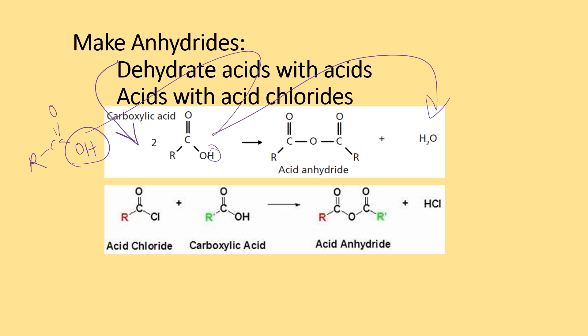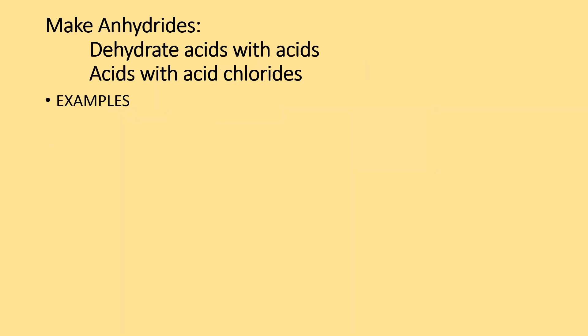You can also use a carboxylic acid and an acid chloride. This time the H and the Cl combine to form HCl, but you still get an anhydride. However many carbons came in on the carboxylic acid are on one side, and the carbons from the acid chloride are on the other. So you make a mixed anhydride.